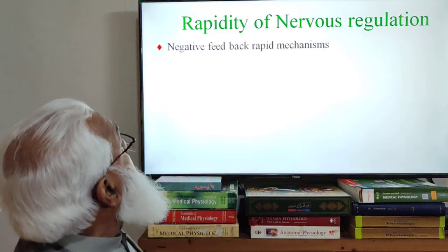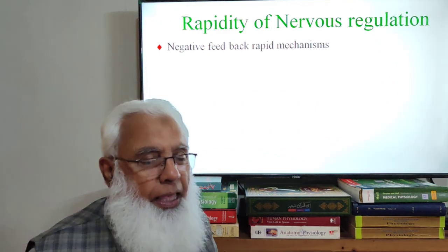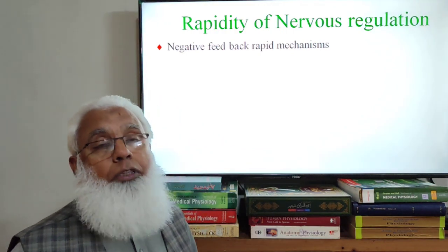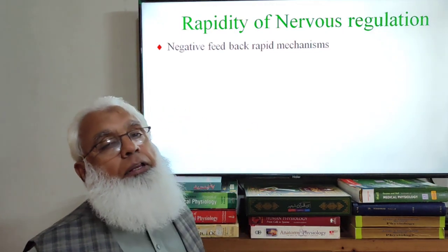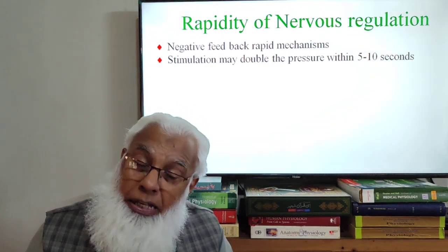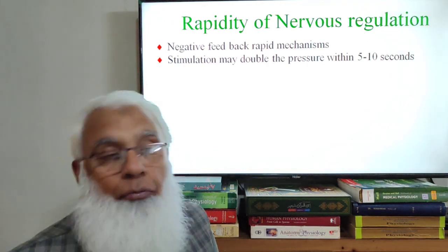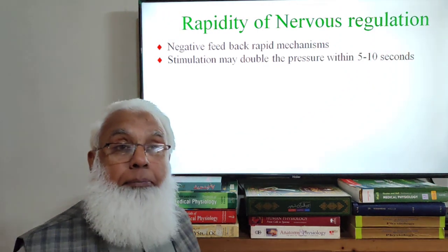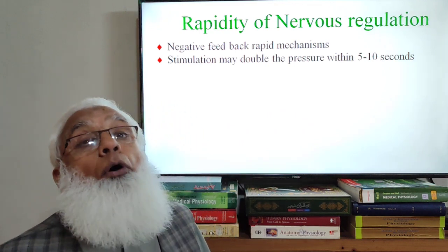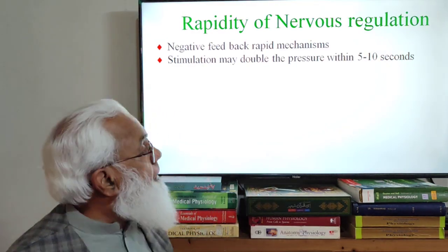This is a very rapid mechanism — a negative feedback rapid mechanism. Negative feedback means: if blood pressure falls, the response rapidly increases it; if blood pressure rises, the response rapidly reduces it. The response is opposite to the initial stimulus. This sympathetic system can even double the blood pressure within five to ten seconds — it is so rapid. Within seconds blood pressure may double.